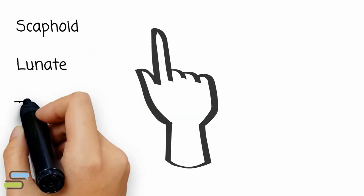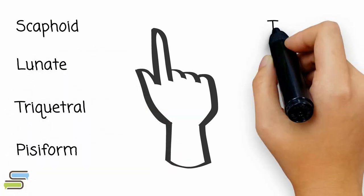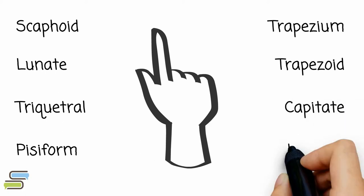Scaphoid, lunate, triquetral, pisiform, trapezium, trapezoid, capitate, and hamate.